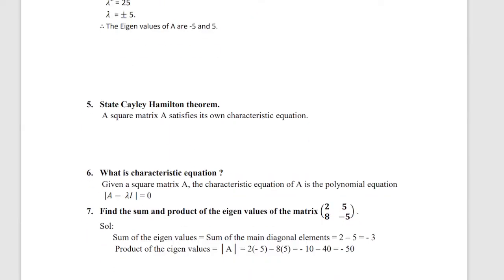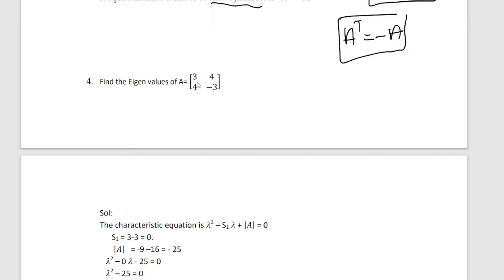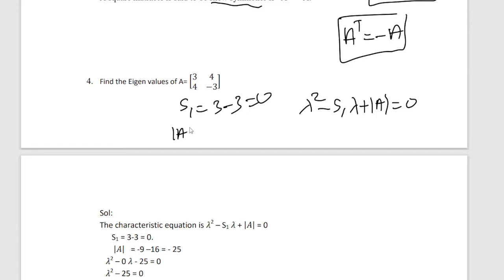Next, eigenvalues. For 2x2 matrices, the characteristic equation is lambda squared minus S1·lambda plus S2 equal to 0. S1 is the sum of diagonal numbers: 3 + (minus 3) = 0. The determinant is 3×(minus 3) minus (minus 4)×4 = minus 9 minus 16 = minus 25.